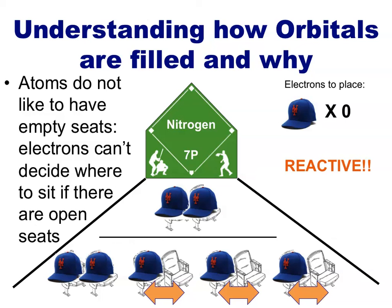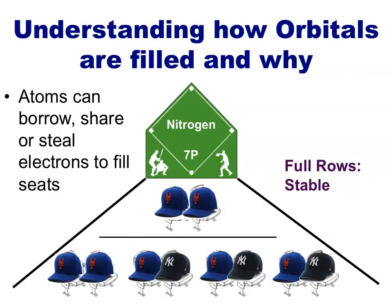Just like stadium owners, atoms do not like to have empty seats. The electrons next to an empty space have two options to pick from, and will be restless until these seats are filled. This will make an atom reactive. The atom will do whatever it can to fill those seats, even if it means sharing or stealing electrons from nearby atoms. Atoms will continue to attempt to fill those empty seats until the entire row or energy level is satisfied, even if it means sharing electrons with another atom — here depicted as fans from another team. This is how atoms interact to form connections and chemical bonds.